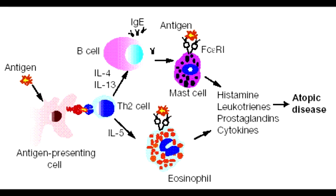Describe what occurs to cause Type 1 Hypersensitivity Reaction. Free antigens cross-link with immunoglobulin E on pre-sensitized mast cells and basophils. This triggers the release of vasoactive amines such as bradykinin and histamine, and they act on postcapillary venules.